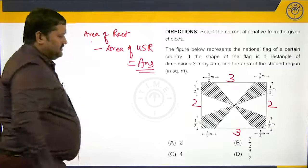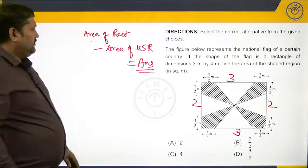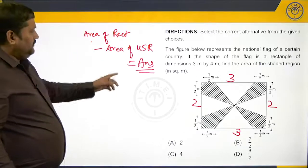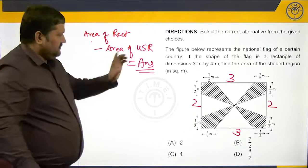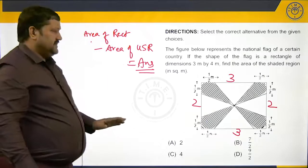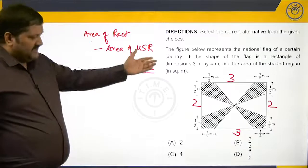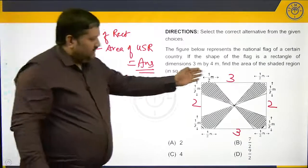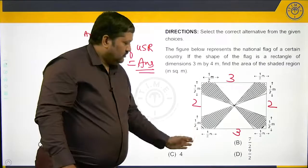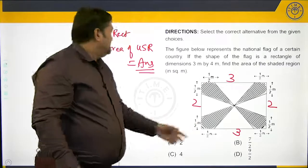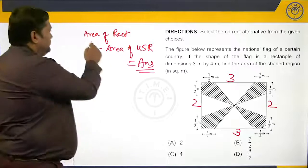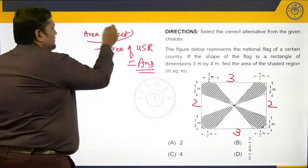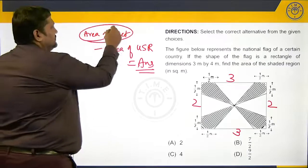So let us figure out what the area of the unshaded region is. The area of the rectangle is very easily 4 into 3, which is nothing but 12. So this part is 12.